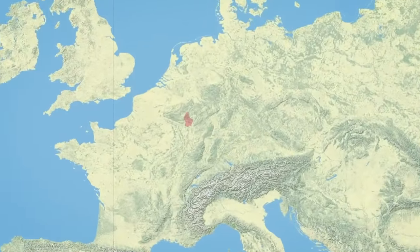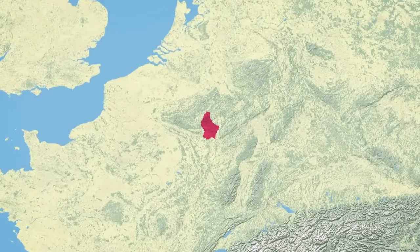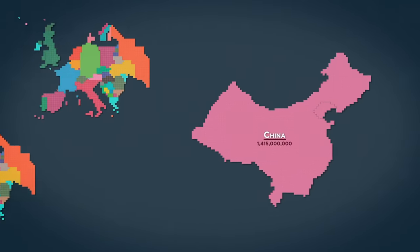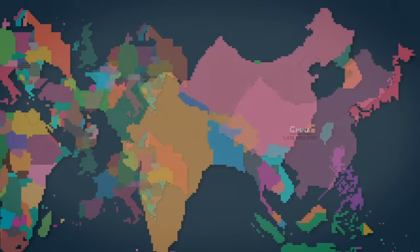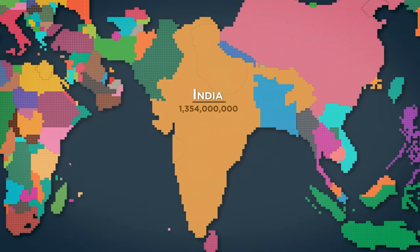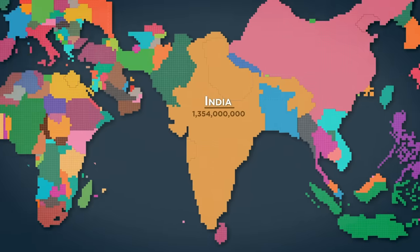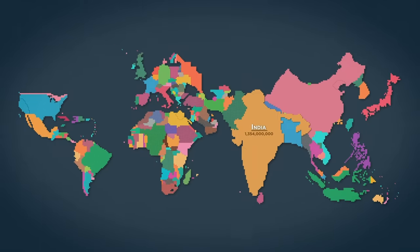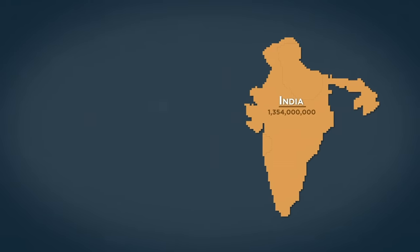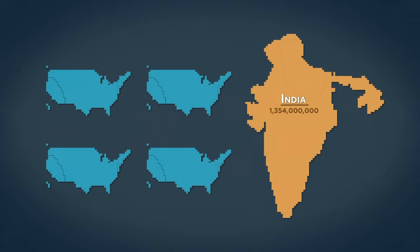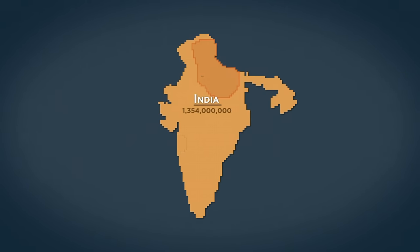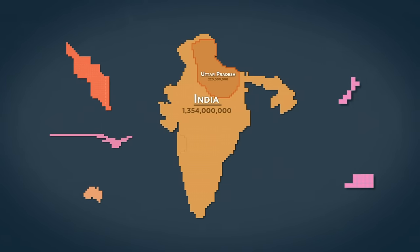China has a higher population than all of Europe has combined times two, but not far behind that is India, the world's second most populous nation that is rapidly catching up to China with 1.354 billion people. When combined, more than one out of every three humans alive on the planet live in either China or India. You could fit the entire population of the United States into India four times over again and still have room left over for more. India's most populous state, Uttar Pradesh, has the combined populations of Russia, Canada, Australia, New Zealand, and Austria.